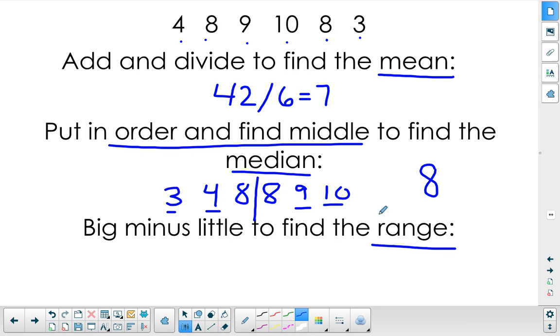To find the range, you take the largest number, the maximum value, and we subtract the littlest value. So 10 minus 3 is 7.